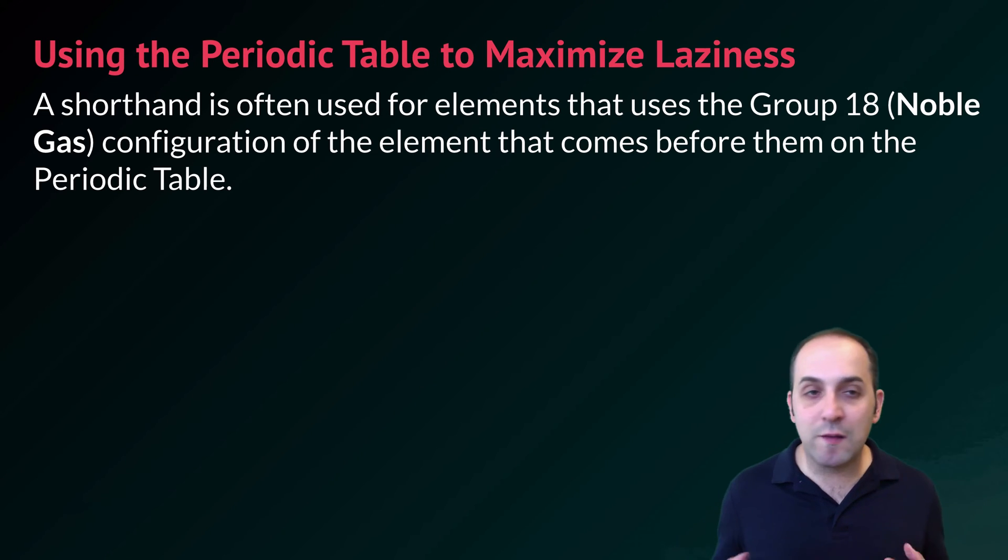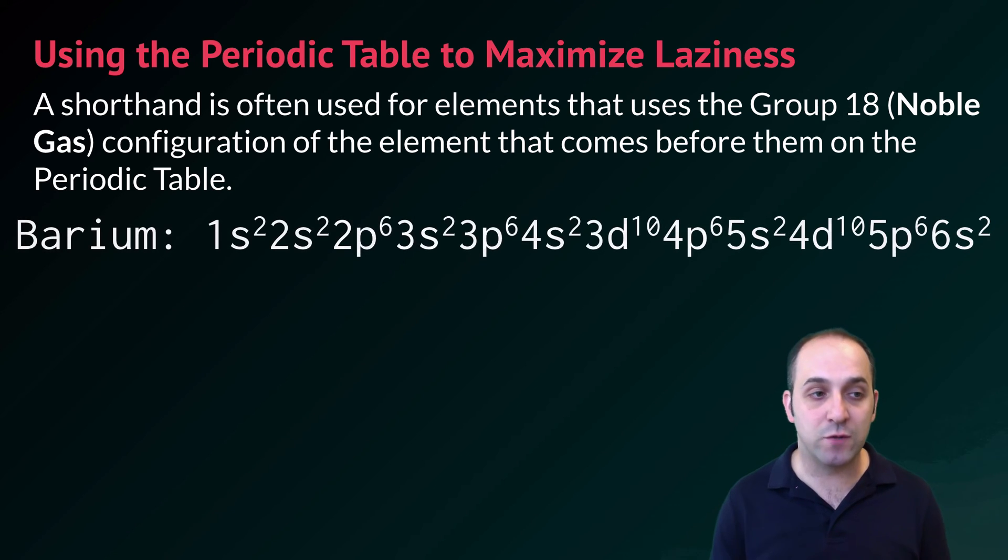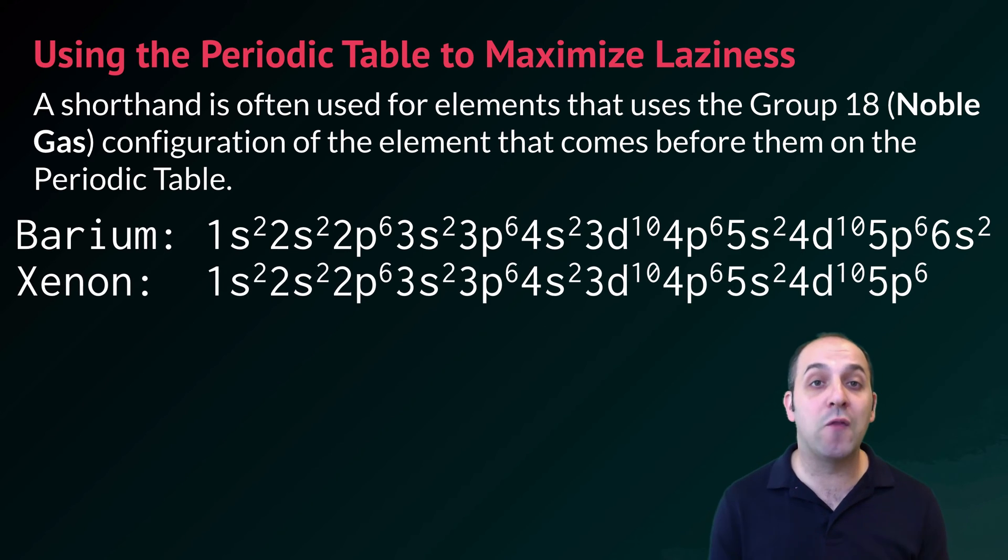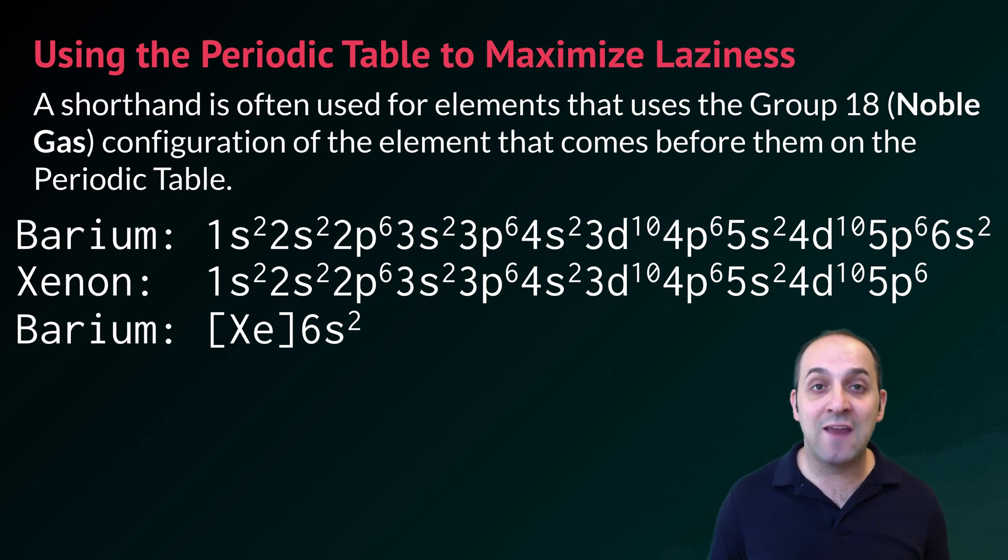Another trick that we can talk about here at the end is using the periodic table to maximize laziness. So a shorthand that's often used for elements is to take the group 18 element, the noble gas that comes before that element, and use that as a shorthand when writing a particular element's electron configuration. For instance, this is the electron configuration for barium. The group 18 element that comes before barium on the periodic table is xenon. Here's xenon's electron configuration. Notice that xenon and barium have almost everything in common. So if we want to write barium's electron configuration using the shorthand, we can simply write barium by taking xenon, putting it in parentheses to indicate that they have the same electron configuration up to that point, and then write in the additional electrons that barium has afterwards, in this case just 6s2. That makes life a little bit easier too.